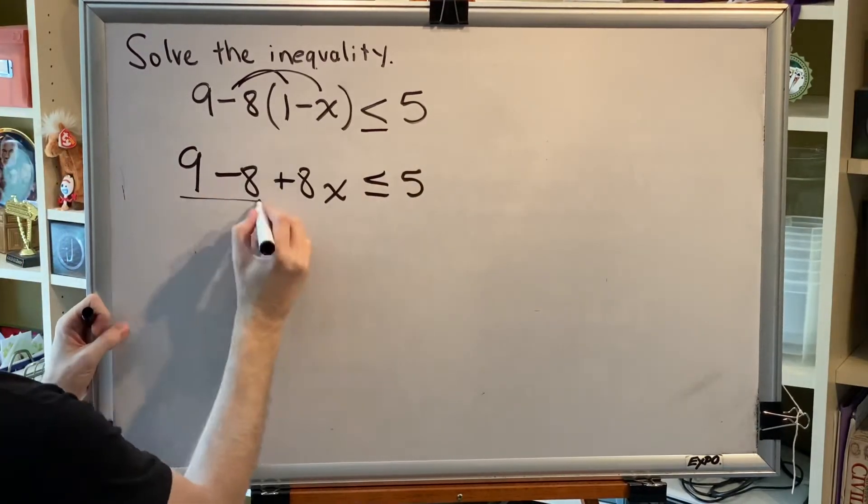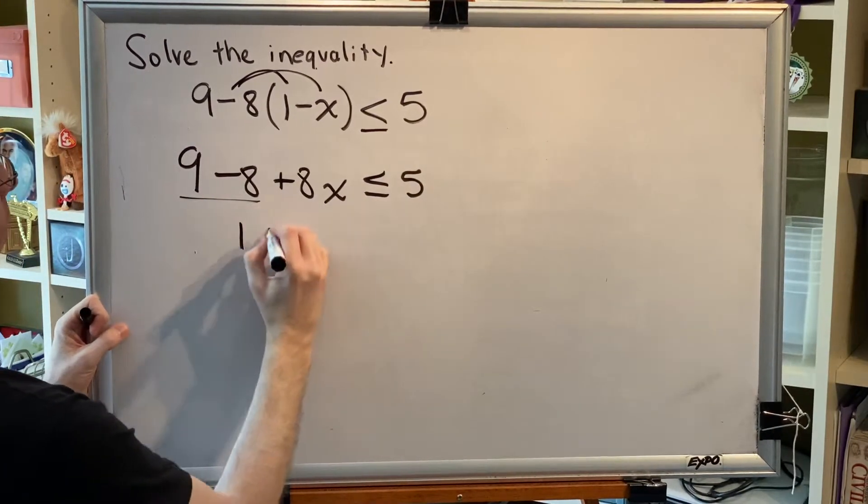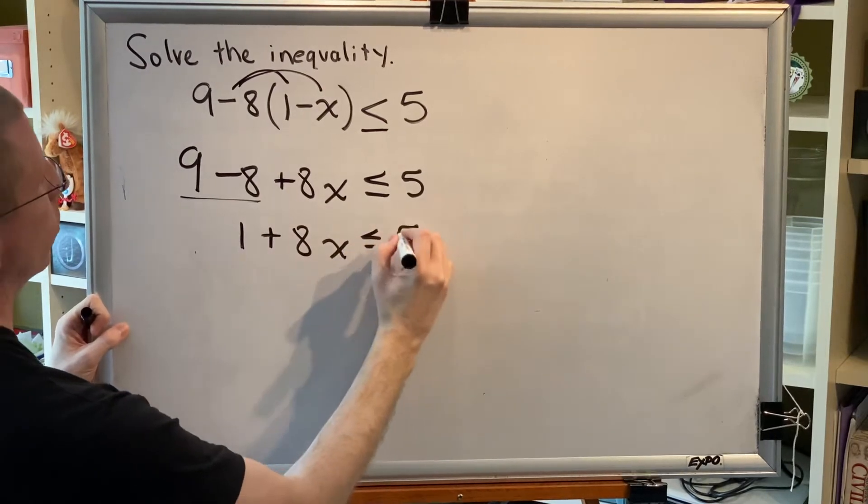Next, combine like terms. 9 minus 8 is 1. 1 plus 8x is less than or equal to 5.